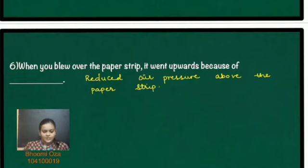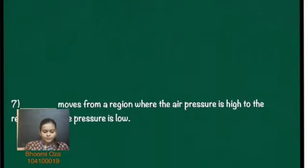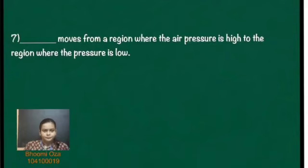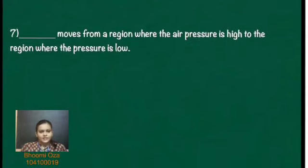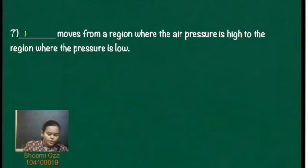The seventh question: dash moves from a region where the air pressure is high to a region where the pressure is low. The answer will be: air. Air moves from a region where pressure is high to a region where the pressure is low.